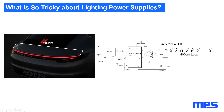By looking at the rear of the car we can roughly estimate a 200 cm LED string connected to the converter, and accounting for the return path for the LED current we have a roughly 400 cm loop. This is a perfect antenna — longer than the antenna on top of the car for the FM radio. Though it is enclosed in the chassis, since we can see it from outside, this antenna can pick up noise and emit noise, so this can be a nightmare for EMI.